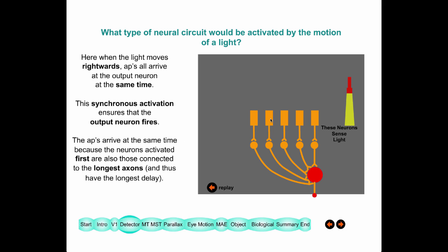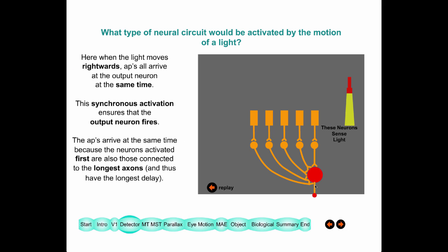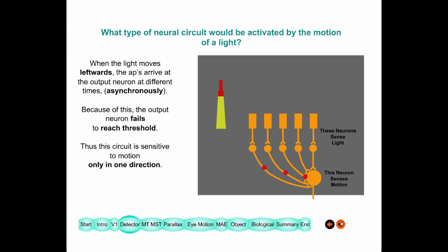A light activates each of the receptors one at a time, and then this output cell fires. The reason it fires is because all these inputs are timed to arrive at the output cell at the same time, causing it to fire. This cell then signals motion in a particular direction at a certain speed. If the speed were different, the timing would not coincide; similarly, if the direction is different, the signals arrive at the output cell not at the same time, so that cell is selective for a particular direction at a particular speed.